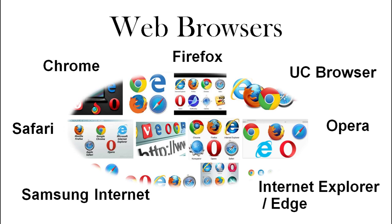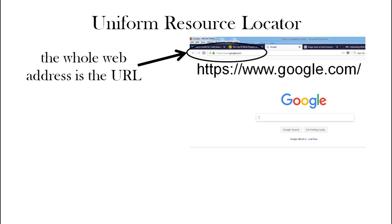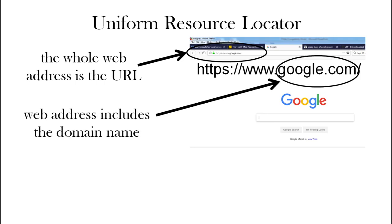So how do we get to see a web page? We can put the address in the address bar. The address is called the Uniform Resource Locator — the URL. So the whole address is the URL. Inside the address you'll probably see a familiar name of a company, and that's called a domain name.